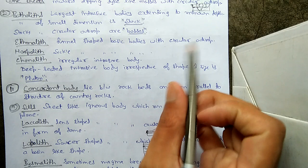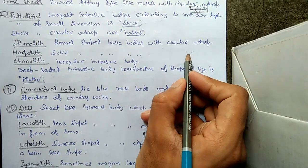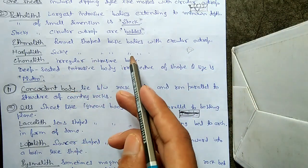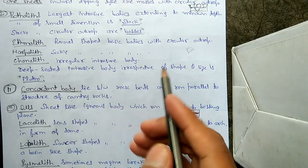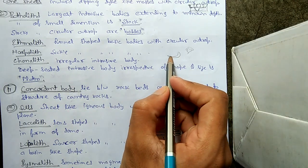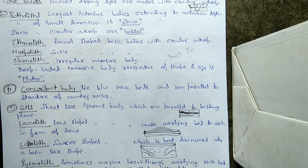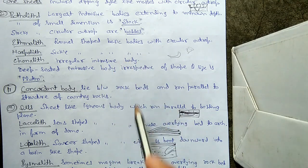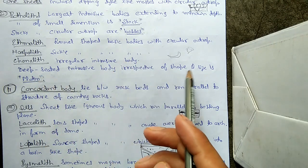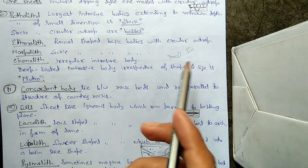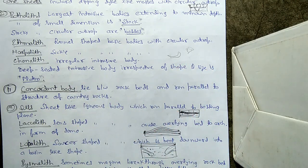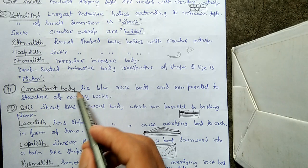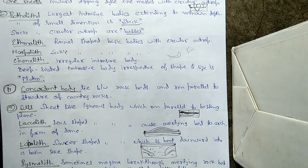Harpolith are sickle-shaped basic bodies with a circular outcrop — bodies that are sickle-shaped are called harpolith. Conolith is an irregular intrusive body with no fixed shape. A deep-seated intrusive body, irrespective of its shape and size, is called a pluton.